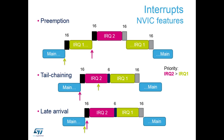Tail chaining is where a second interrupt of lower priority arrives while we're processing the higher priority interrupt. IRQ2 comes in and interrupts main, we have 16 cycles of stacking, we process IRQ2, then rather than doing 16 cycles of unstacking followed by 16 cycles of re-stacking for IRQ1, there are just 6 cycles in the middle — tail chaining — which loads the new parameters for IRQ1. This saves processing cycles when you receive multiple interrupts within the same period of time.